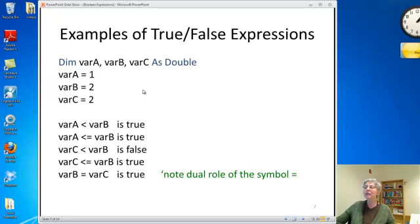So here are some examples using numbers. I have three variables which are doubles. And I've assigned them values one, two, and two respectively. And here are some little expressions. So for example if I write var a less than var b, well var a equals one and var b equals two, it is less. So the value of this expression is true. Less than or equal, also true. Var c less than var b, well var c is two and var b is also two. It's not actually less, so that's false. But less than or equal, that one's true. And what about equal? That's also true.